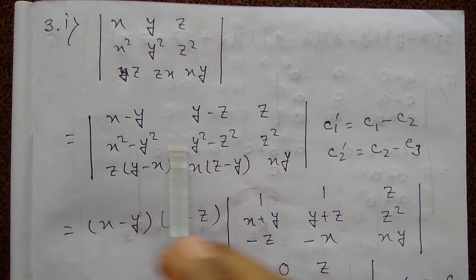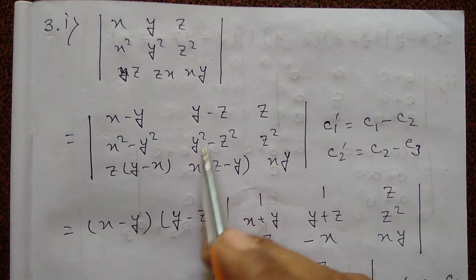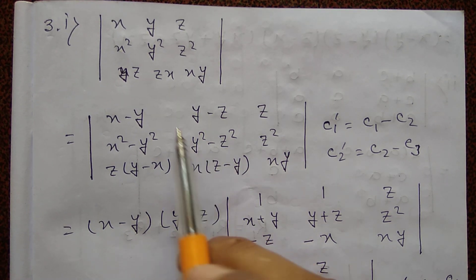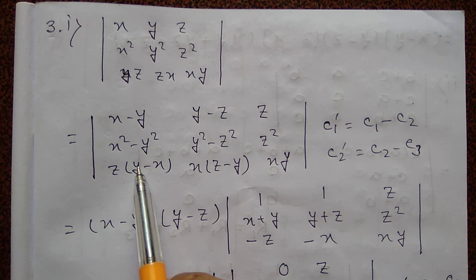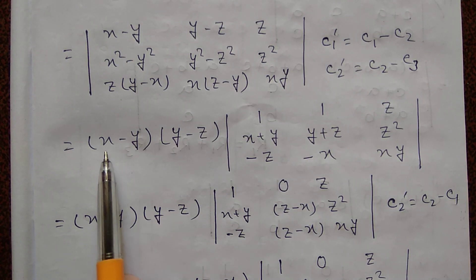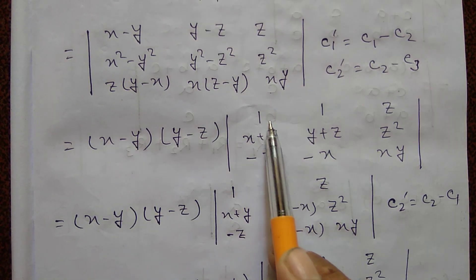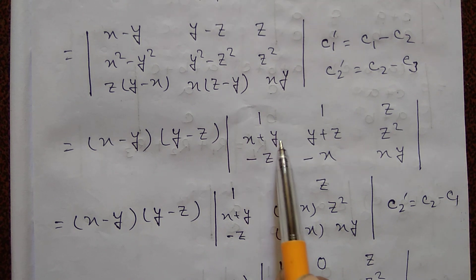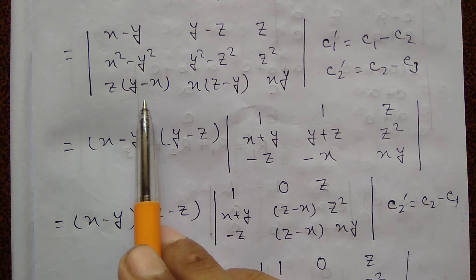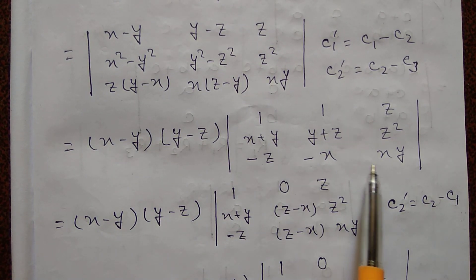Taking common factor x minus y from the first column and y minus z from the second column, the matrix becomes: 1, 1, z; x plus y, y plus z, x plus z; z into y minus x divided by common, and entries x minus y minus z. After factoring, the third column remains: z, z squared, x minus z.